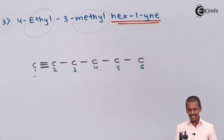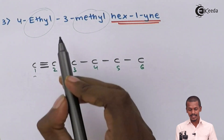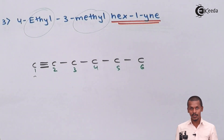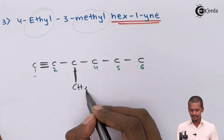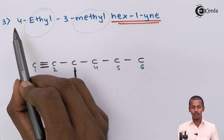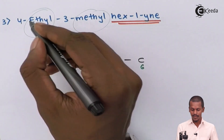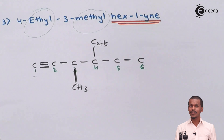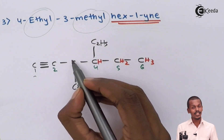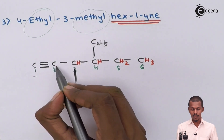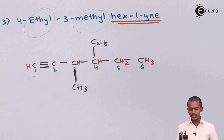We now fulfill the valencies with hydrogen. The terminal carbon at position 1 forms one bond in the triple bond — it needs no additional H since the triple bond and chain bond account for the bonds. Carbon 2 is in the triple bond and has one bond to C3 — it is satisfied. Carbon 3 with the methyl group forms 3 bonds total, so it gets one H — written as CH. Carbon 4 with the ethyl group is satisfied with 4 bonds — no H needed. Carbon 5 forms 2 bonds so it is CH2. Carbon 6 is terminal with one bond, giving CH3. This is the structure of 4-ethyl-3-methyl-hex-1-yne.